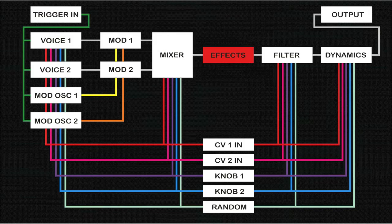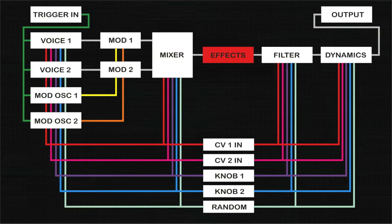The output of the mixer is then routed to the digital effects section. Here you can choose three different types of effects including bit crushing, distortion, and companding.